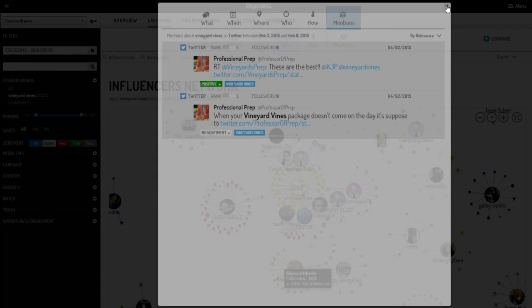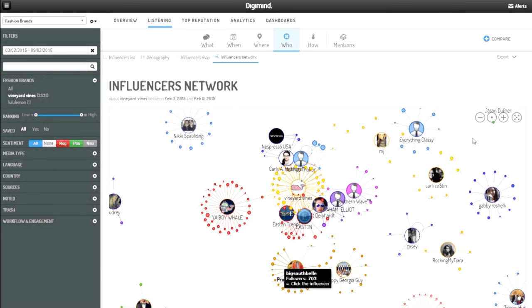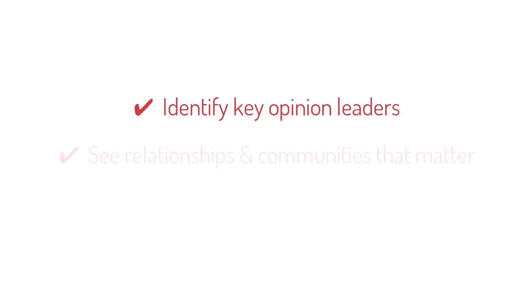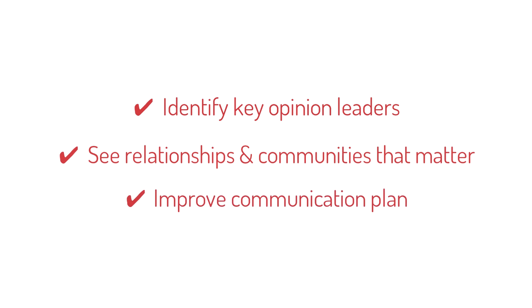Using DigiMind's Influencer Network, I can quickly see my brand's primary influencers, the communities they have created, and how these communities are interacting with each other. With these insights, I can then identify key opinion leaders for my brand and monitor them closely, identify relationships and communities that matter, and improve our communication plan by knowing who to engage with, ignore, or monitor more closely.